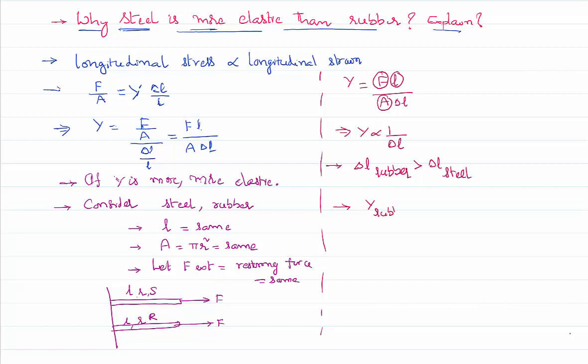So it's very clear that Y of the steel is more. As the Y of the steel is more, its elasticity is also more. That implies steel is more elastic than rubber.